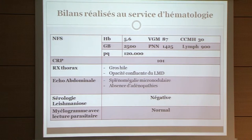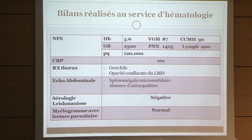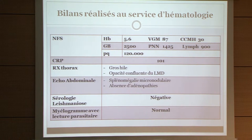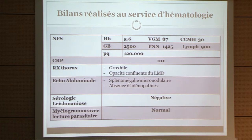Investigations performed in hematology included a CBC showing hemoglobin at 5.6, white cells at 2,500, lymphocytes at 900, elevated CRP at 101. Chest X-ray showed cardiomegaly and confluent opacity of the right middle lobe. Abdominal ultrasound showed micronodular splenomegaly without adenopathy. Leishmaniasis serology was negative, and bone marrow aspirate with parasitic reading was also normal.